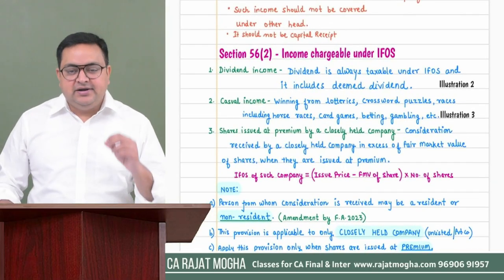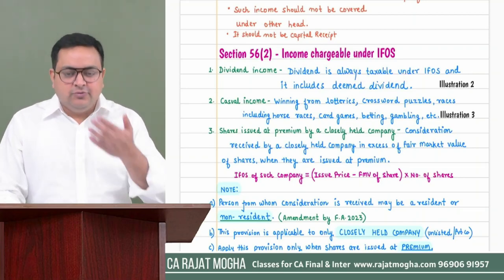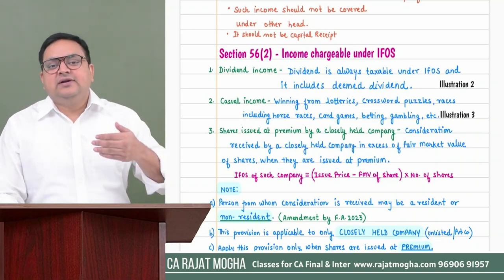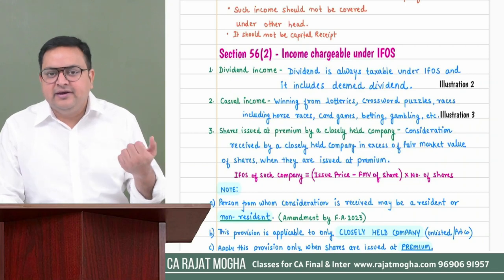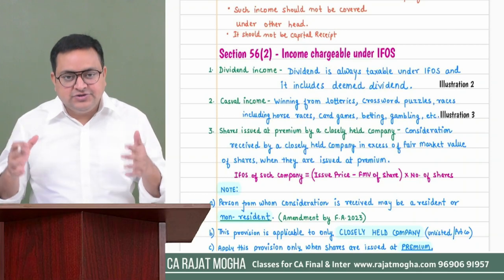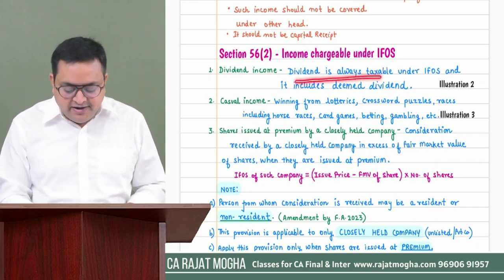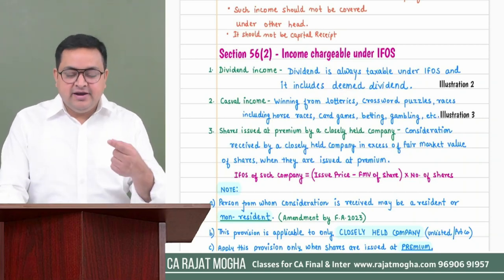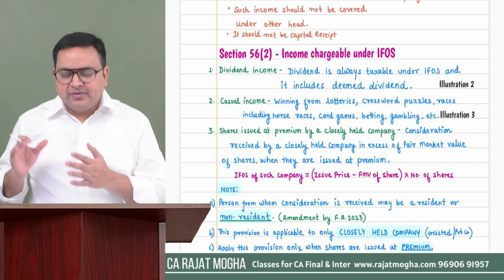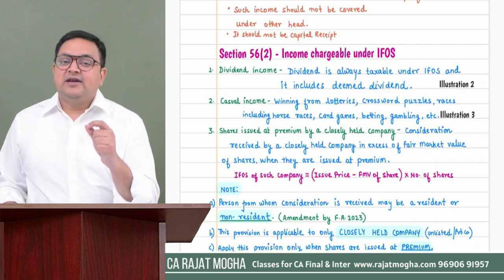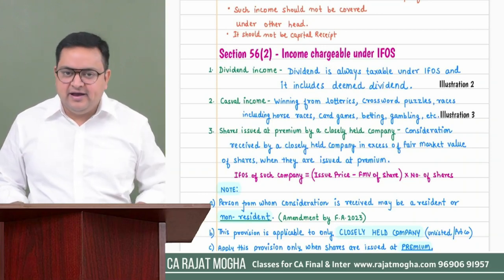First, it says dividend income. Dividend income is always IFOS. If there is a stock broker who deals in selling and purchasing shares, his profit or loss is business income. But if he holds some shares and receives dividend on them, such dividend is always IFOS. Section 56(2) specifically mentions that dividend income — including deemed dividend under Section 2(22) — is always taxable under IFOS.